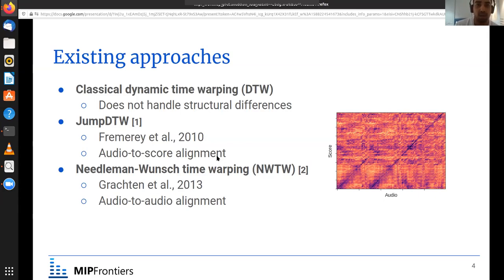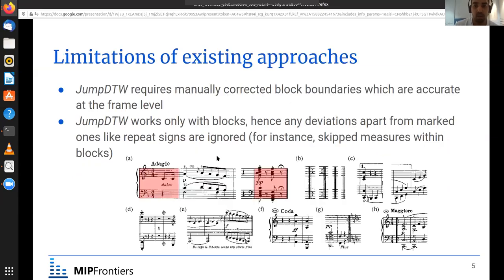And now we briefly talk about the limitations of these two methods. Jump2tw requires block boundaries which are accurate at the frame level, so most likely these are to be manually corrected after some automatic OMR systems. And since it only works with blocks, it cannot handle deviations which are within the block, for instance skip measures. And also since it uses chroma-based features, progressions which are similar, two measures which have similar harmonic progressions can be confused. Two blocks which have similar harmonic progressions can be confused.